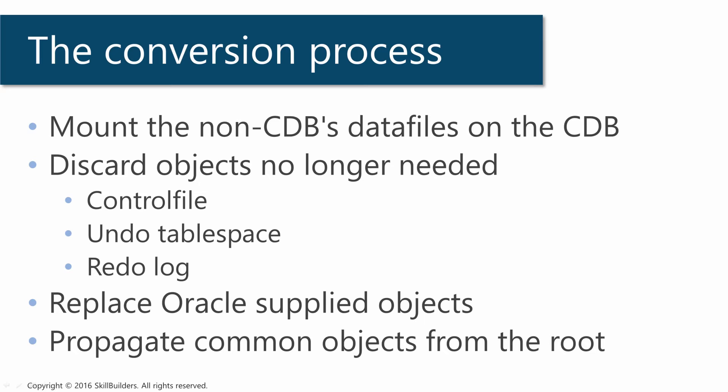During that process, various objects are discarded from the non-CDB. Its control file is discarded because the container database has its own control file that manages the entire container database. The undo tablespace is also discarded because the CDB already has an undo tablespace, and a PDB uses that one — it does not have its own undo tablespace.